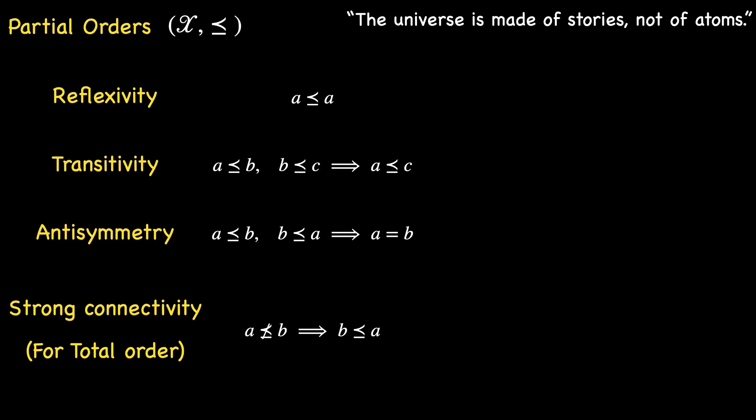Consider a set X equipped with a partial order denoted by greater than or equal to. Let M be an upper bound of a subset A of X when M is greater than or equal to every element in A. If the upper bound M belongs to A, it earns the label of a maximum.